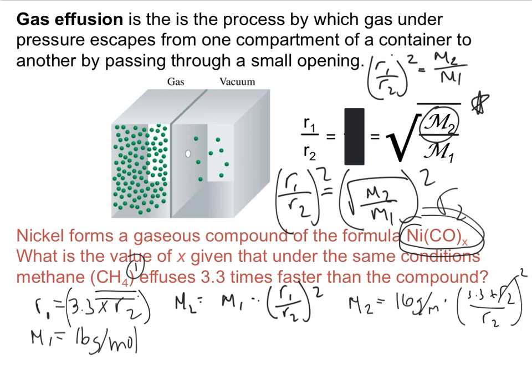If we cross out the variables that are constant, r2 divided by r2 is going to give you 1. So really what M2 ends up being equal to is 16 grams per mole times 3.3 squared, which if we calculate that out gives us 174.2 grams per mole. That gives us the mass of our Ni(CO) compound.